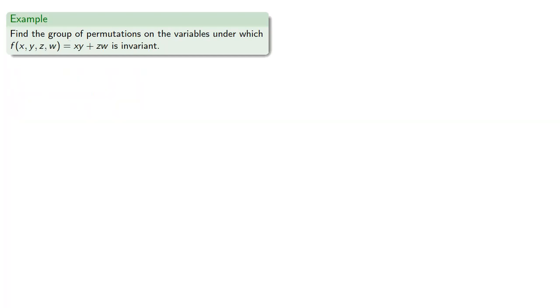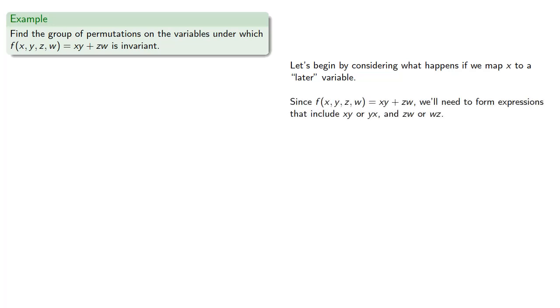What about a function like f of x, y, z, w equals xy plus zw? Let's begin by considering what happens if we map x to a later variable. Since our function is a product of x and y with a product of z and w, we'll need to form expressions that include xy, or yx, and zw, or wz.